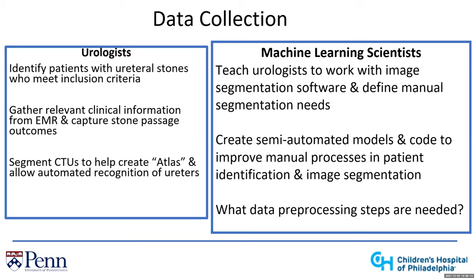As a machine learning scientist, we collaborate with urologists on image segmentation to create manual labels for network training. In this step, we create semi-automated models to improve the manual process in patient identification and model segmentation. After generating the models, we also need to consider what kind of data pre-processing steps are needed to fit the data into the model.